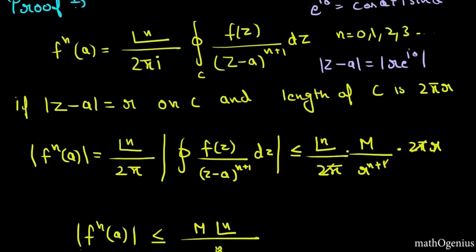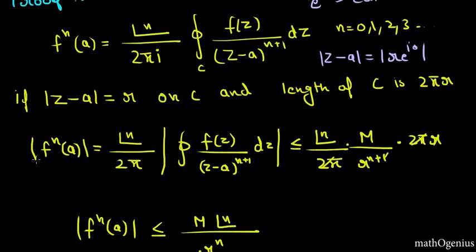Now we will take the modulus of f^n(a). We take the mod of this. We get n factorial by 2 pi i. Mod of i is 1. This is how i equals 0 plus 1i and its mod is square root of 0 square which is 0 and 1 square which is 1 which equals 1. That's why we get a 1 in here.